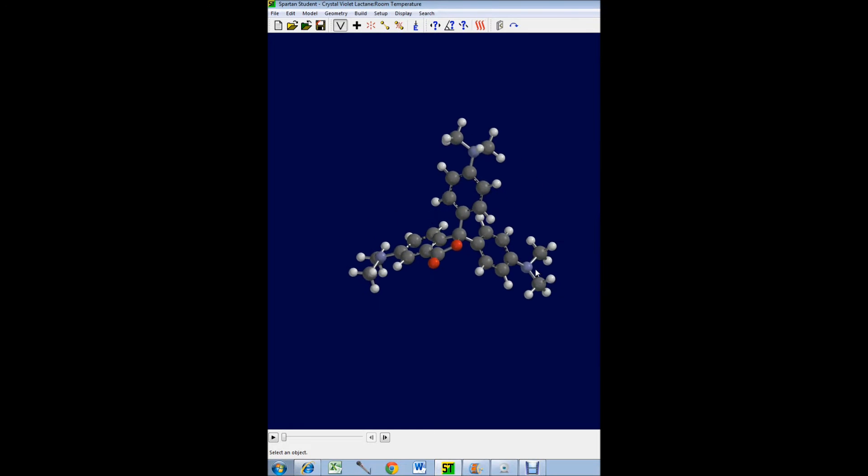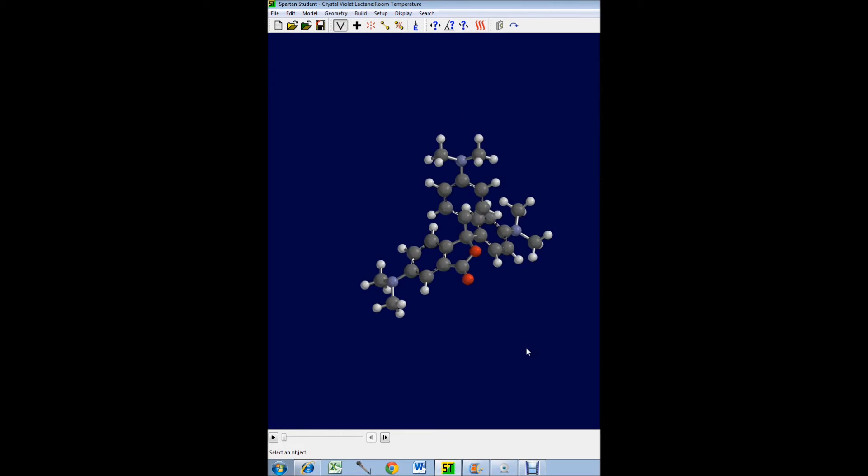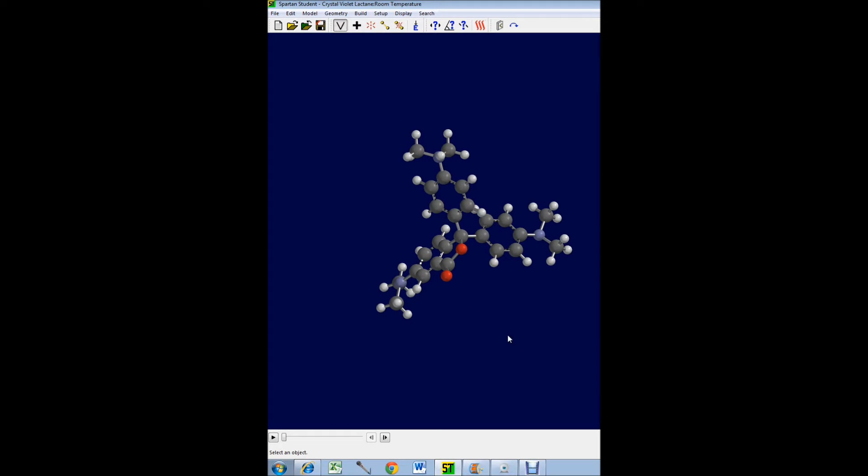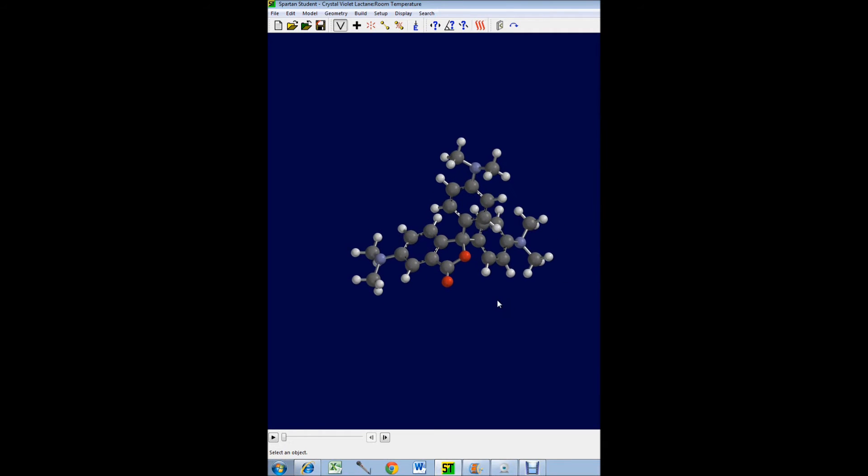Okay well here is the molecular structure of the high temperature form of the crystal violet lactone. And you can see that, well first of all the gray atoms are carbon, the white atoms are hydrogen, the red atoms are oxygen, and the blue atoms are nitrogen. And you can see that one of the oxygens is bonded to the central carbon atom in the high temperature form.